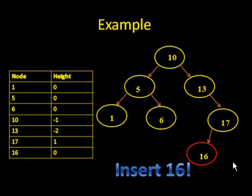Now, what if we insert 16? Okay, so now we have to recalculate the balances of the nodes of the tree. And if we do that, we notice that the number 13 now has a balance of -2. That's bad.